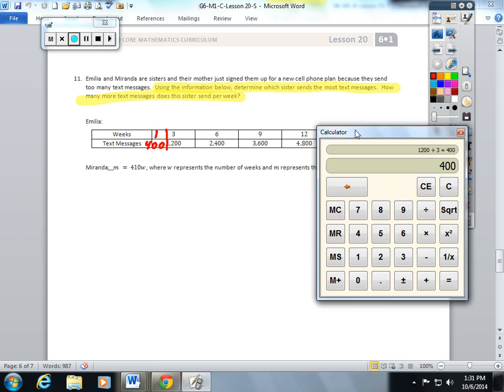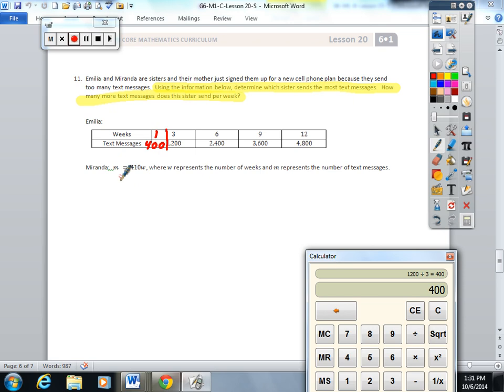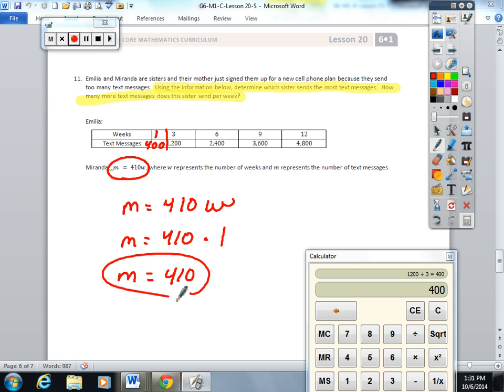And Miranda's doesn't have a table. It actually has an equation. The messages equals 410 times the week. So I'm going to put one in for the week. And in one week, she sends 410 text messages.